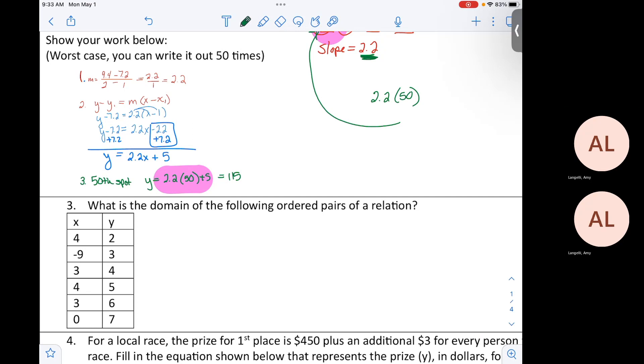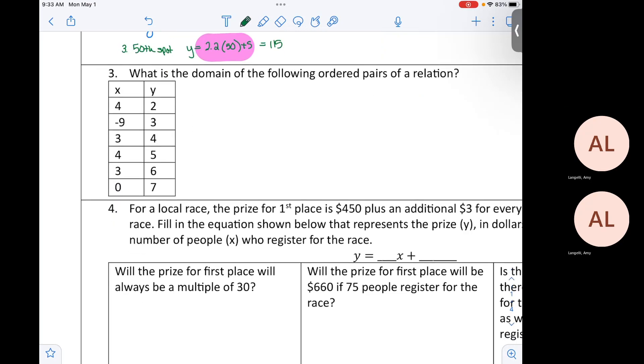Domain of the following, domain of the ordered pairs of the relation. Who knows the domain over there? And how do we do them? What should we write first? Those are braces. What should be the first X we write? 3, 4, and that's it. Notice she did not repeat the 3 and the 4, even though they happened more than once. That's your domain, your X values.